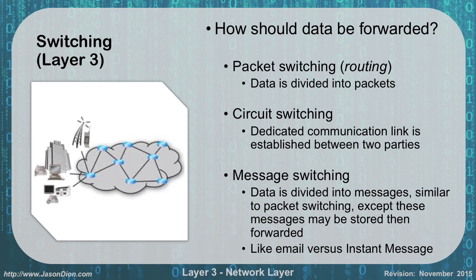The other method is circuit switching, where a path is established between the first router and the last router, and all the information is sent over that circuit. This is like your telephone system — the old public switched telephone network. When you picked up the phone and called grandma's house, for the whole duration of your call you were on the same path. With data packets we don't need that consistency, but with voice it usually does use circuit switching, at least in the old voice networks.